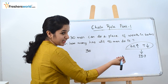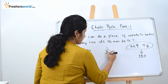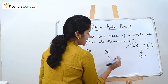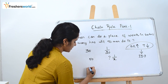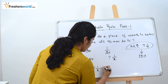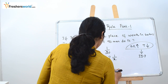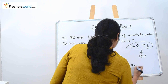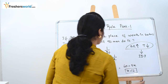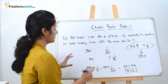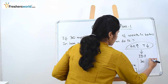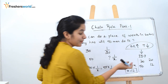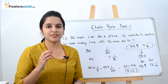Since it is indirect proportion, we take the reciprocal. 30 men complete in 20 hours; 50 men complete in x hours. We set up: 30 × (1/x) = 50 × (1/20). Solving: 30/x = 50/20, giving x = 12. For 50 men it takes 12 hours. Here the number of men increased, so the time taken decreased — confirming indirect proportion.